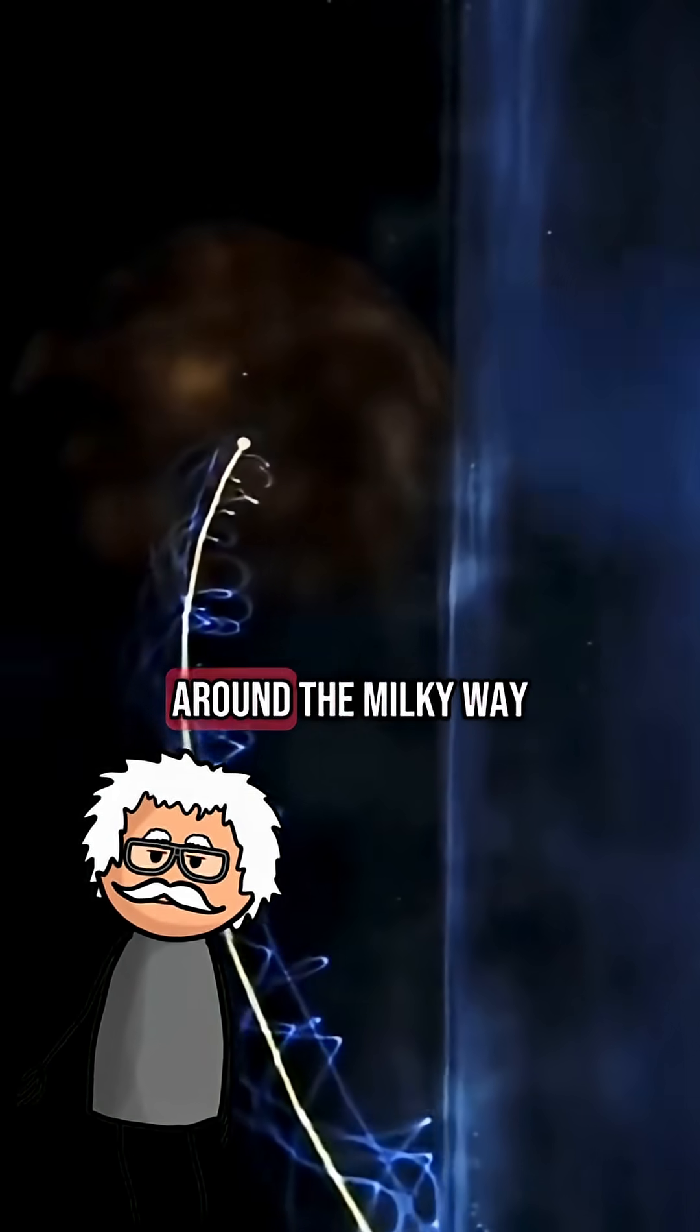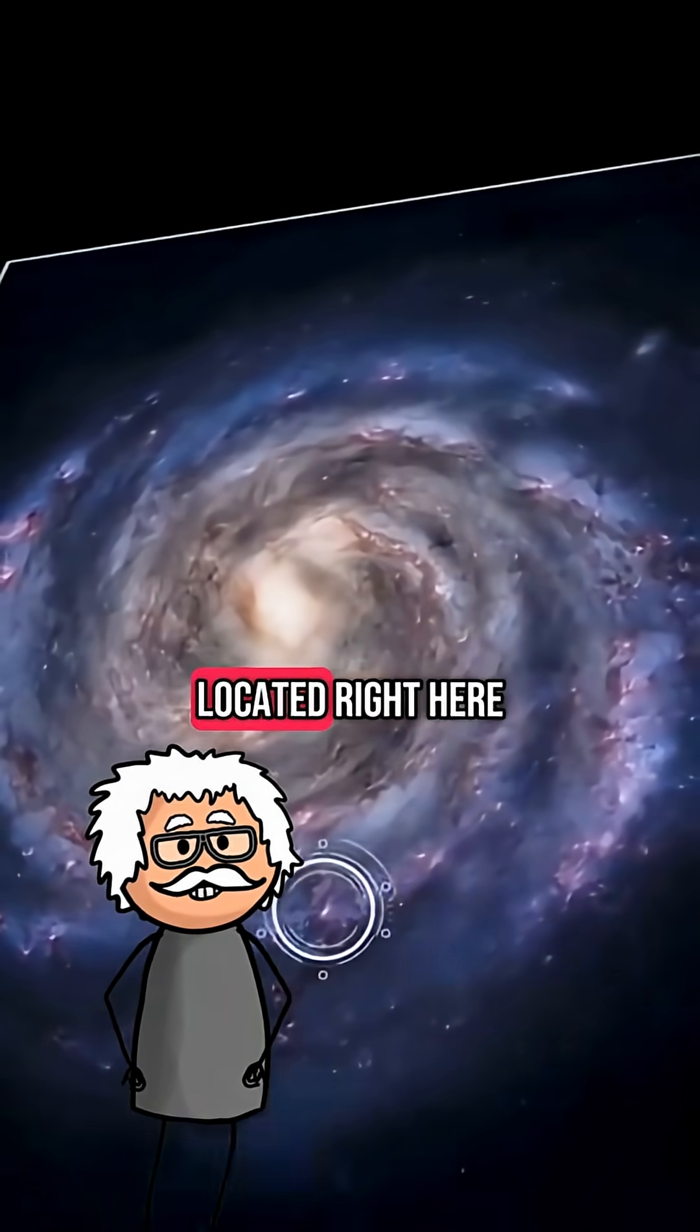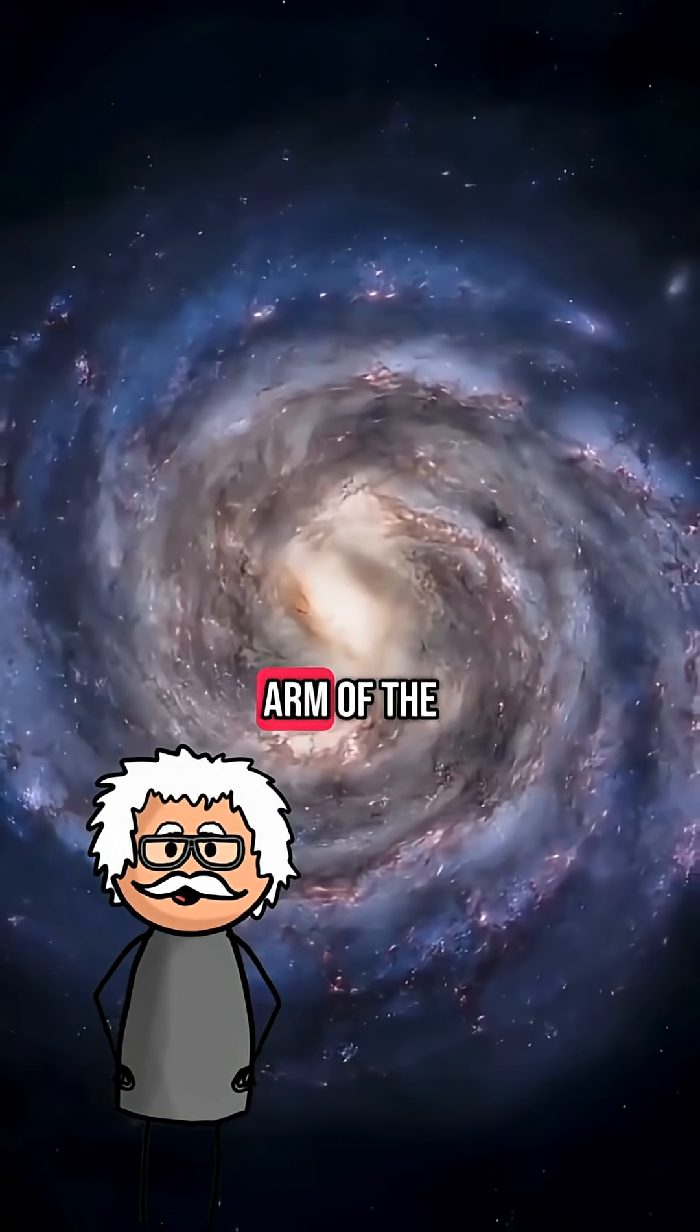How many times have we traveled around the Milky Way? Earth is located right here, in the Orion arm of the Milky Way.